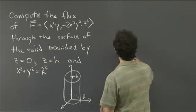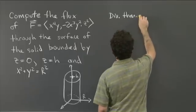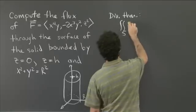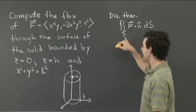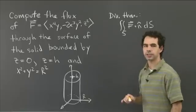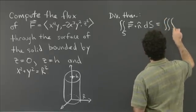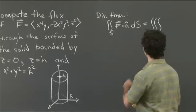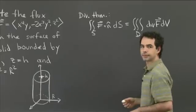So the divergence theorem says that — abbreviating it div thm — the double integral over the surface of F dot n dS, where S is the surface of this solid, equals the triple integral over the solid region D, so that's the solid cylinder, of div F dV.